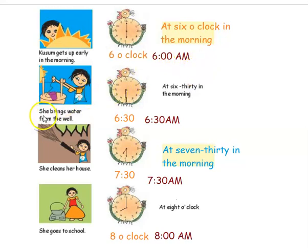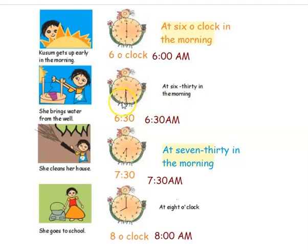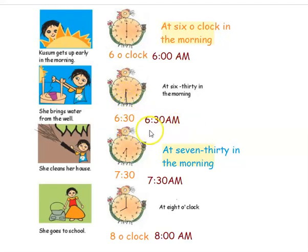The second activity is she brings water from the well. The given time is 6:30 in the morning. So 6:30 means the hour hand is at 6 and the minute hand is also at 6, because 6 represents 30 minutes. Both hands are at 6. We can write it as 6:30 a.m.